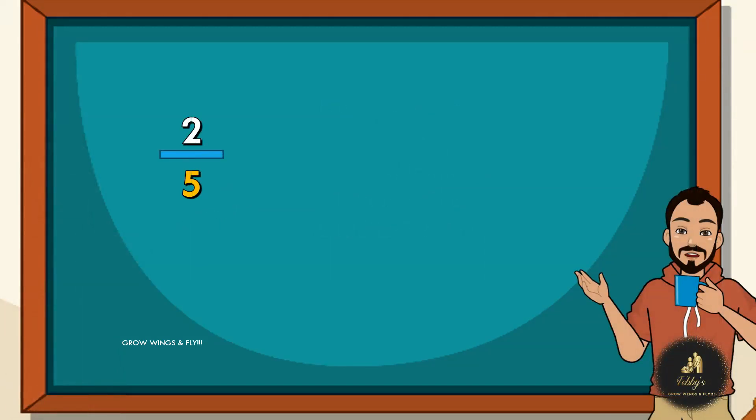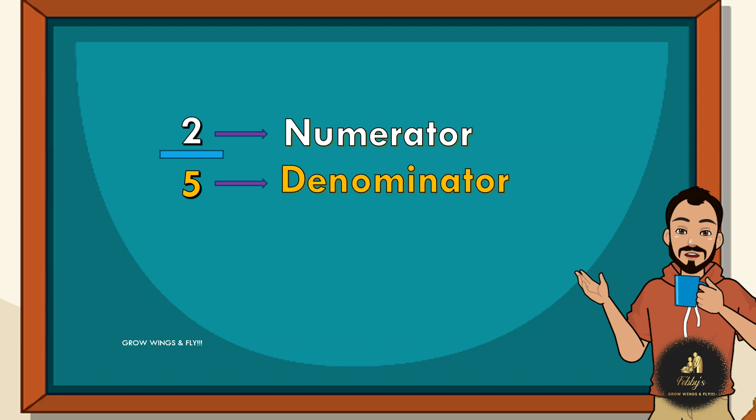A fraction is something which is written like this. So there is a number on the top. Then you have a dash below that. And then you write a number below the dash. The number on the top is called a numerator. And the number at the bottom is called a denominator. Please get used to these words because these words will be used in the lessons following.